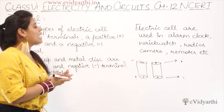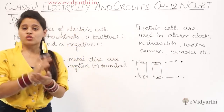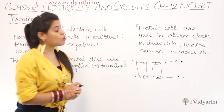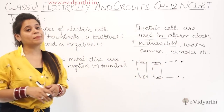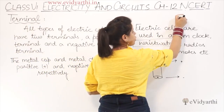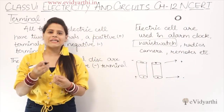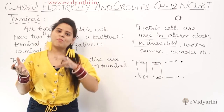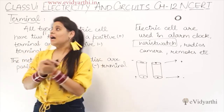Electric cells are used in alarm clocks, wrist watches, radios, cameras, remotes, etc. These are all examples where electric cells are used. Also, you might be wondering - wrist watches use such a big cell? You may have seen a wrist watch cell - it is round and a small silver-colored cell. Your teacher will show it to you. It also has the same thing - one positive terminal and one negative terminal.